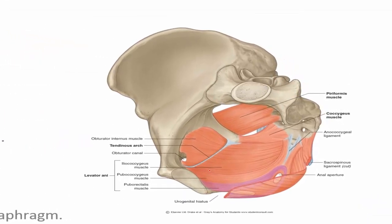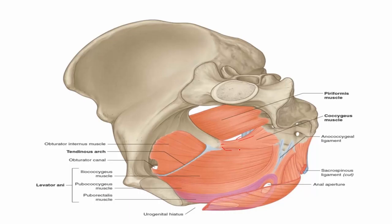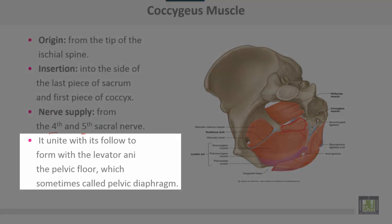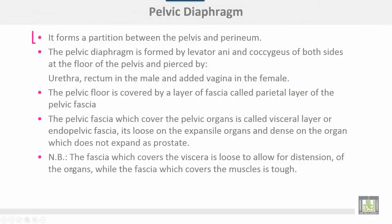The levator ani muscle, completed with the coccygeus muscle, forms the pelvic diaphragm. Coccygeus muscle: origin from the tip of the ischial spine, inserted into the sides of the last piece of the sacrum and the first piece of the coccyx. Nerve supply from the fourth and fifth sacral nerves. Together with levator ani it forms the pelvic floor, sometimes called the pelvic diaphragm. The pelvic diaphragm forms a partition between the pelvis and perineum, formed by levator ani and coccygeus of both sides, and is pierced by the urethra, rectum in the male, and additionally the vagina in the female.